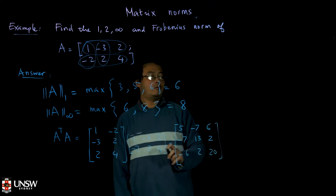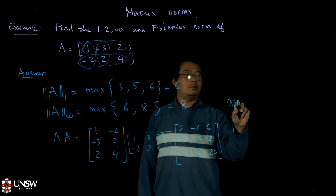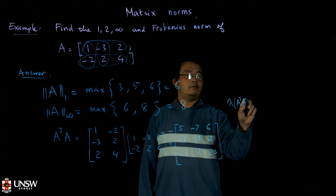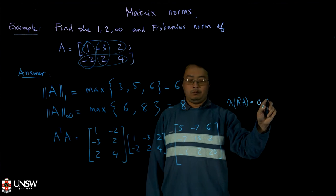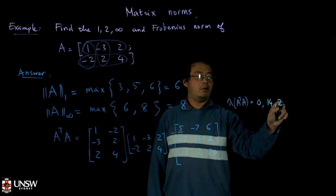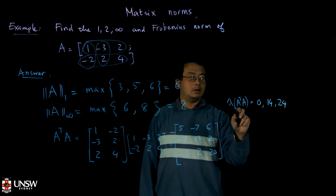And now you have to find the eigenvalues of the matrix A transpose A. So the eigenvalues of this matrix are 0, 14, and 24. And then you take the max of the 3 eigenvalues.